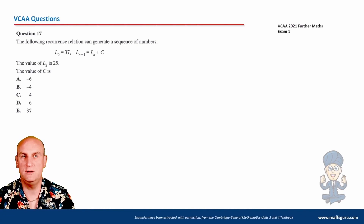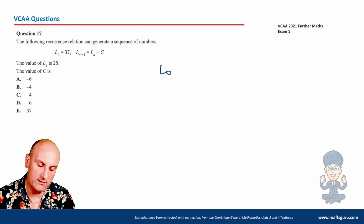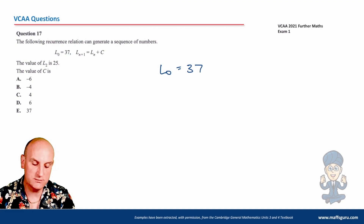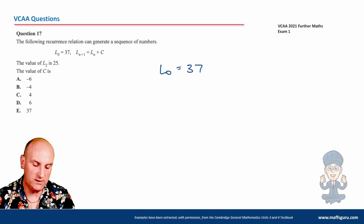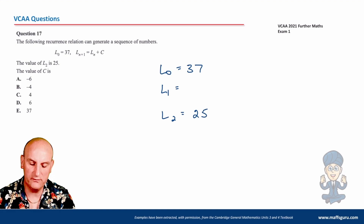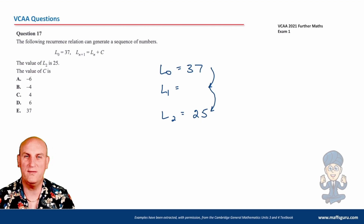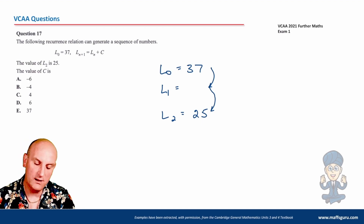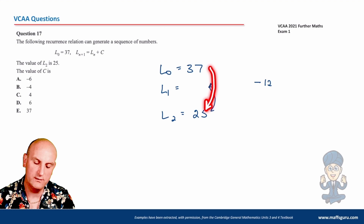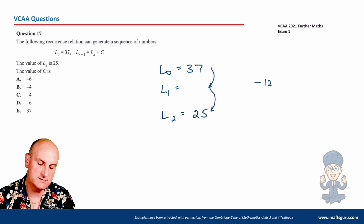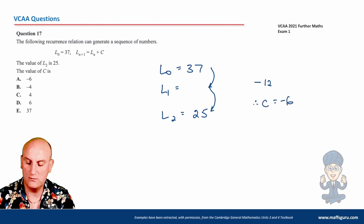The following recurrence relation can be used to generate a sequence. L₀ is 37; to get to my next term I take my current term and add C. I don't know what C is. But the value of L2 is 25. So I've added C twice to get from 37 to 25. The total change is 37 minus 25 equals 12, and since I've done it twice, I halve it: minus 6. So C must equal minus 6.